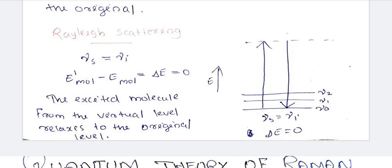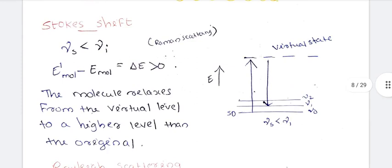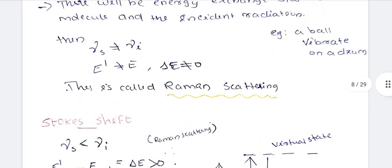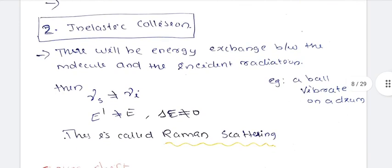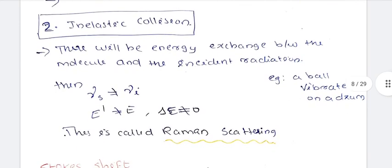In Rayleigh scattering, the molecule is excited to the virtual level and relaxes to the original level. νs is equal to νi, and delta E is equal to zero. In inelastic collision — Raman scattering — there will be an exchange of energy between incident radiation and the molecule. Delta E is not equal to zero, and νs is not equal to νi.